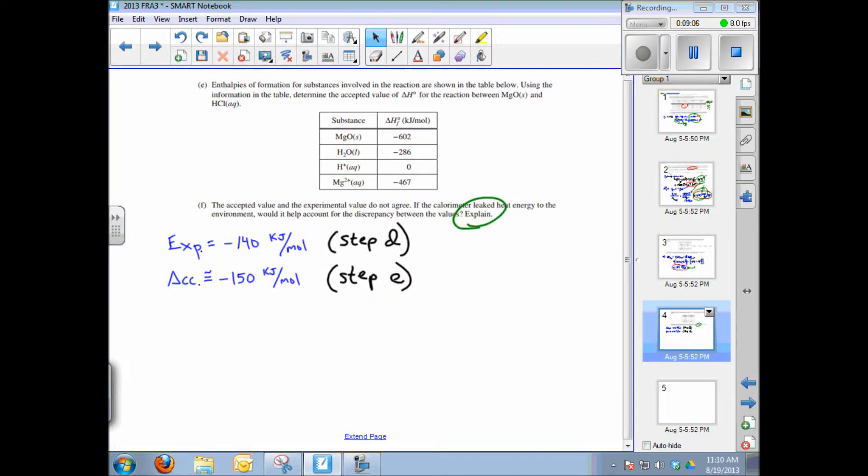So the loss of heat to the calorimeter would definitely explain the discrepancy between the experimental and the accepted values for delta H. In other words, the experiment looks less exothermic than it actually is because we couldn't measure some of the heat that was generated. It was lost to the calorimeter, lost to the atmosphere. And that concludes this video tutorial on free response question number three.